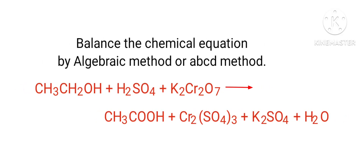Balance the Chemical Equation by Algebraic Method, also known as the ABCD Method. The reaction is: Ethanol plus Sulphuric Acid plus Potassium Dichromate gives Acetic Acid plus Chromium Sulphate plus Potassium Sulphate plus Water.